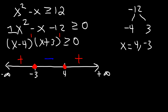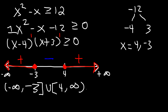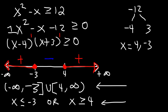We're looking for the region where the expression is positive, so we shade the region to the right of 4 and the region to the left of negative 3. In interval notation, the answer is negative infinity to negative 3, including negative 3 with a bracket, union 4 to infinity. As an inequality: x is less than or equal to negative 3, or x is greater than or equal to 4. That's how you solve this quadratic inequality.